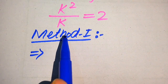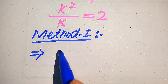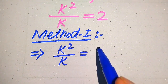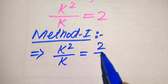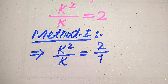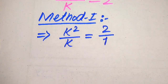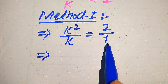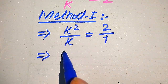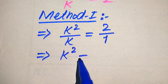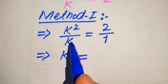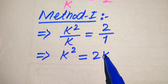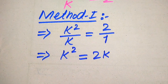In the first method, on the right hand side the denominator is 1, so it can be written as 2 divided by 1. We cross multiply the terms: 1 multiplied by k squared gives k squared, and k multiplied by 2 gives 2k. So k squared equals 2k.